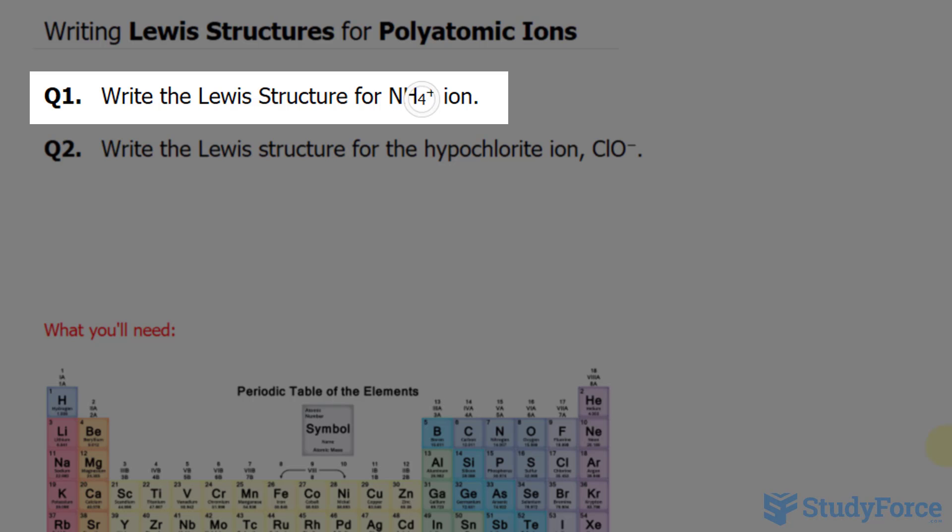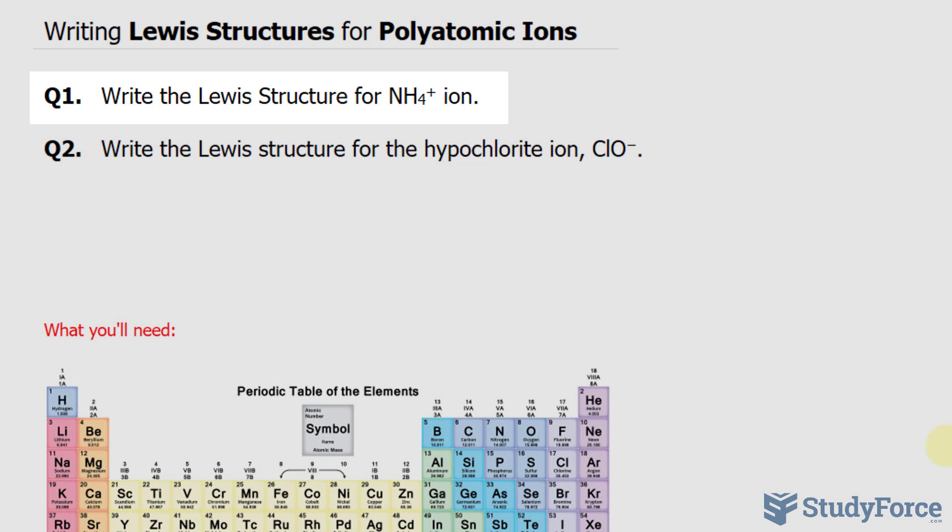The first thing that I want to do is write the skeletal structure for the molecule. Since nitrogen is more electronegative than hydrogen, you want to place the nitrogen atom in the central position and the hydrogens around it.